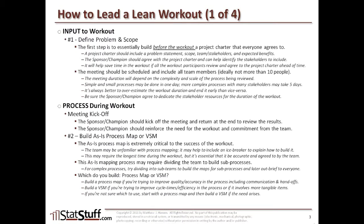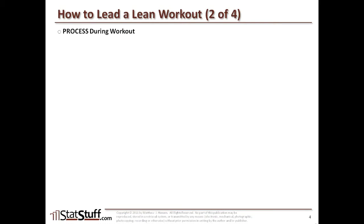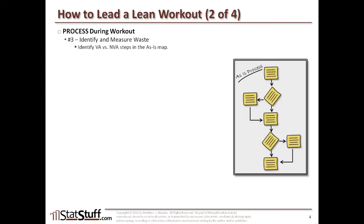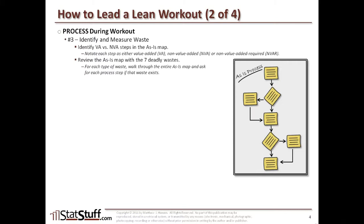Now that you have a good as-is process map, you'll want to explore it in more detail in this third step of identifying and measuring waste within the current process. With the entire as-is process map laid out, identify any value-added or non-value-added steps that exist within it, and make notations about whether each step is value-added, non-value-added, or non-value-added but required. Then you would review the as-is map across the seven deadly wastes, which are broken out as TIM WOOD. For each type of waste, walk through the entire as-is map and ask for each process step if that type of waste happens to exist.